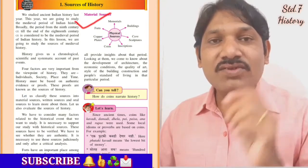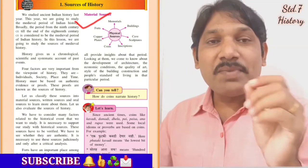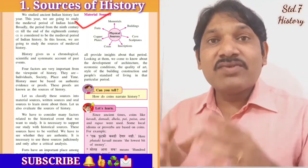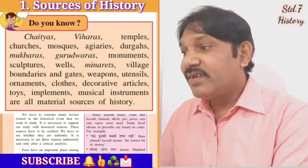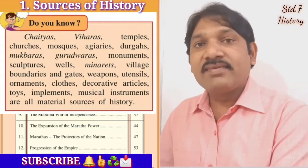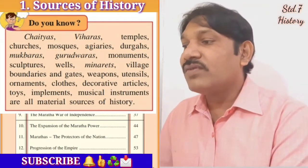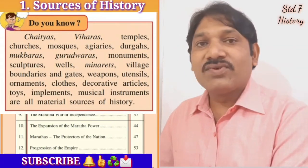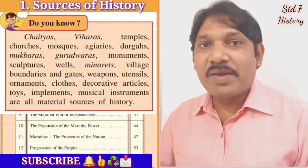In the first part of this chapter we studied material sources — memorials, buildings, cave sculptures, inscriptions, coins, copper plates, and forts. Forts are a very important and reliable source of history. Other material sources include chaityas, viharas, temples, churches, mosques, agres, dargas, makbaras, gurudwaras, monuments, sculptures, wells, minarets, village boundaries and gates, weapons, utensils, ornaments, clothes, decorative articles, toys, implements, and musical instruments.